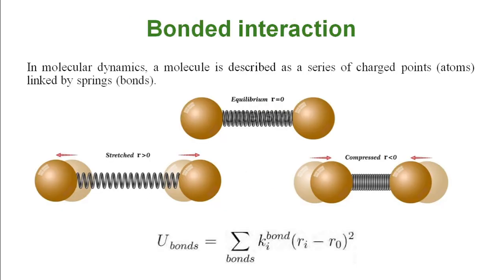In molecular dynamics, a molecule is described as a series of charged points — that means atoms — linked by bonds. These bonds are considered as springs. When the bond length is at equilibrium — that means at its resting state — the atom has no potential energy. But if you stretch or compress this bond, the atom gains potential energy. We can calculate this potential energy by subtracting the bond length from the equilibrium bond length. U is the potential energy gained from the bond length change, and we calculate it through this equation using the equilibrium bond length, the actual bond length under compression or stretch, and a constant value.